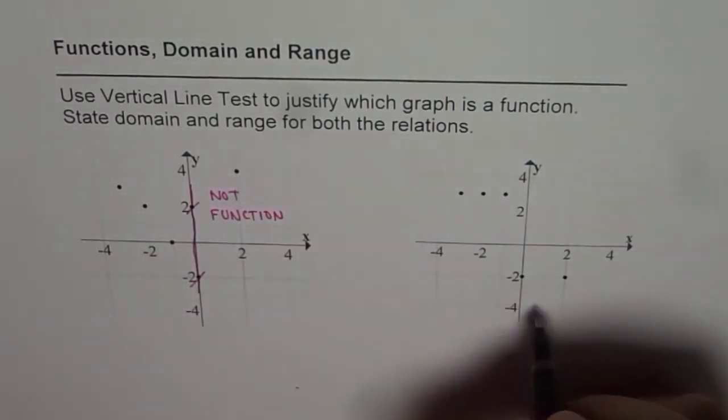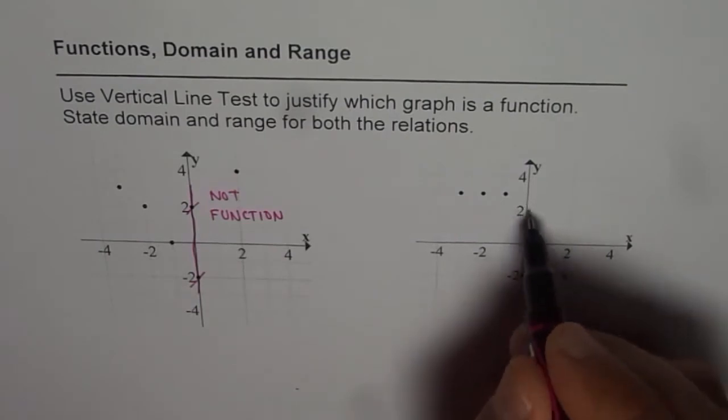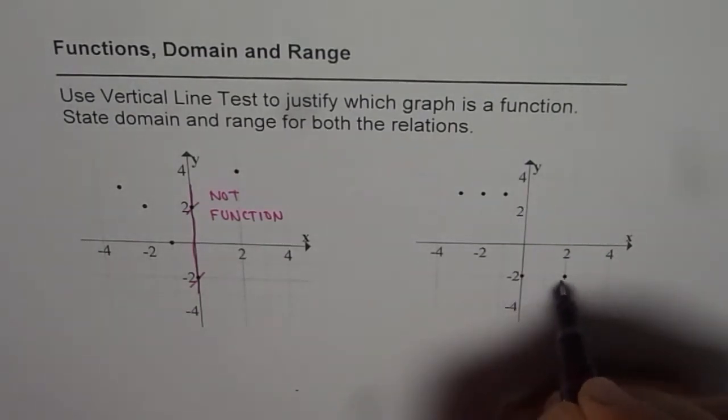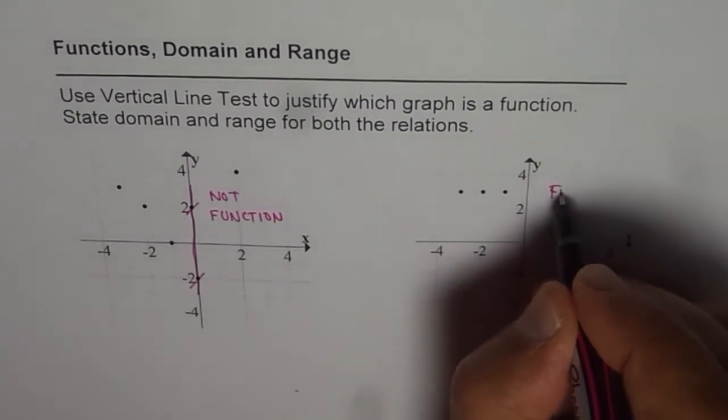However, in the second graph, any vertical line will go through only just one point. Therefore, this is a function.